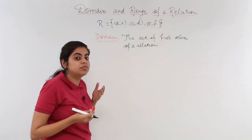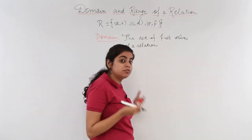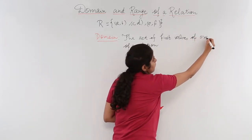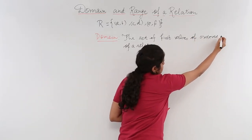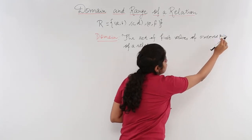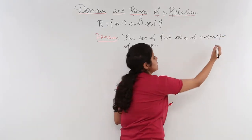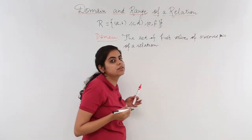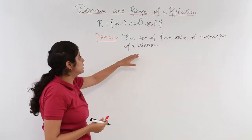And the first values of what? The first values of the ordered pair. The first values of the ordered pair of the relation is called as the domain.